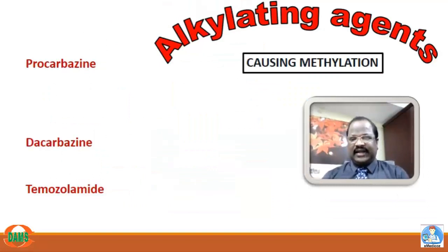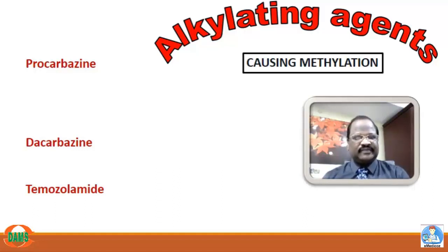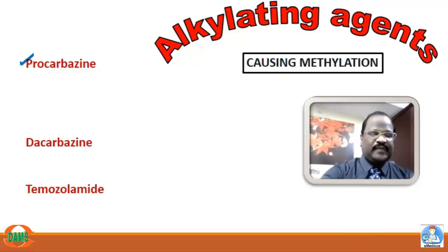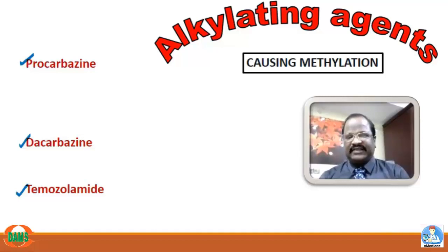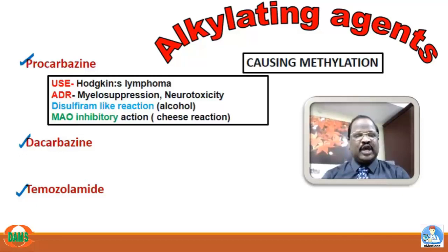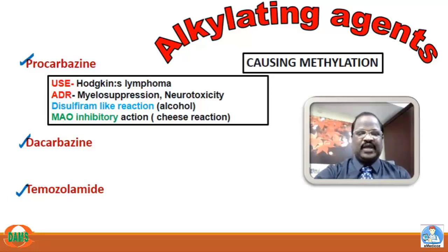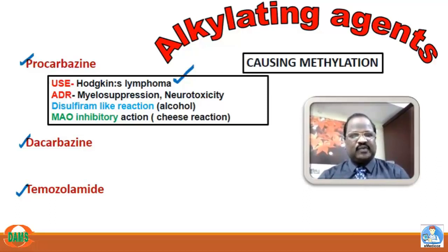Alkylating agents causing methylation reaction include procarbazine, dacarbazine, and temozolomide. Procarbazine is an important drug useful for treatment of Hodgkin's lymphoma. Its adverse effects include myelosuppression and neurotoxicity.